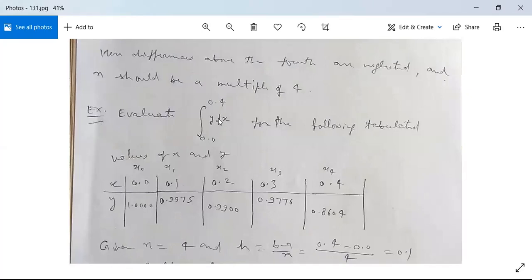Evaluate integration 0.0 to 0.4 y dx for the following tabulated values of x and y. We are given the values of x in the first row as x₀, x₁, x₂, x₃, and x₄.